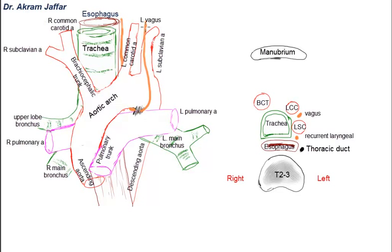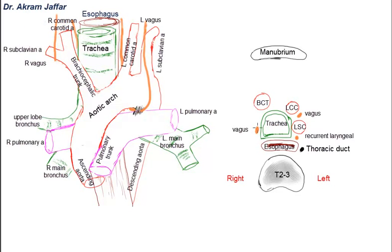The right vagus nerve crosses in front of the right subclavian artery, and at that point gives off the right recurrent laryngeal nerve. In the transverse section, we can only see the right vagus nerve, because this section is located below the level of formation of the right subclavian artery — the right recurrent laryngeal nerve has already been given off at a more superior level.